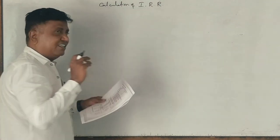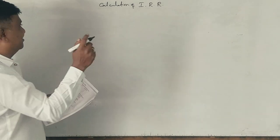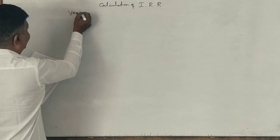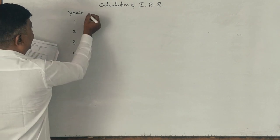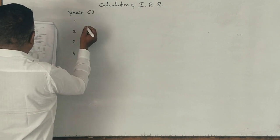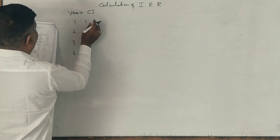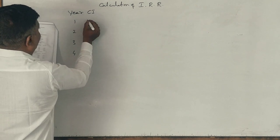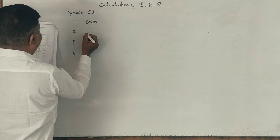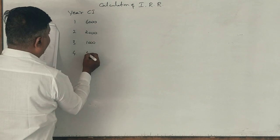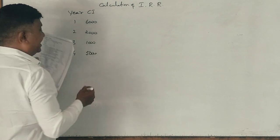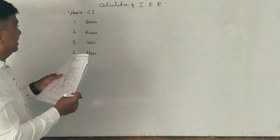IRR means what? Internal rate of return. First, I will take year. 1, 2, 3, 4 years. Cash inflow. How much is there? Product cost, please don't take it. First year, 6,000. Second year, 2,000. Third year, 1,000. Fourth year, 5,000. Right, sirs.